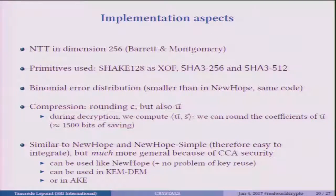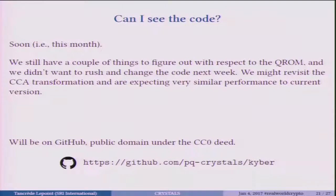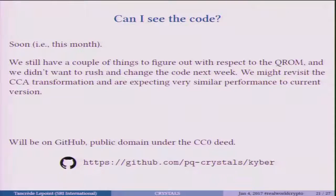This scheme can be used like NewHope but is actually much more general — you can use it for encryption as a KEM-DEM or as authenticated key exchange. As for when you can see the code: we were groups that weren't working together at first and then came together. We still have a couple of things to agree on with respect to the quantum random oracle model and the CCA transformation. We expect really similar performance compared to the existing code. We already have a GitHub account — PicoCrystal is created — and as soon as the implementation is available, we'll put it there.